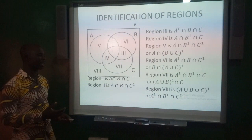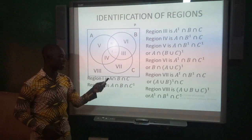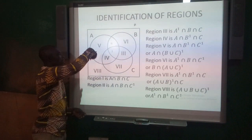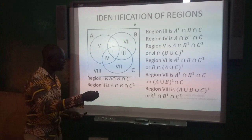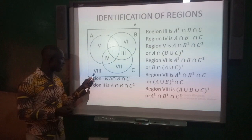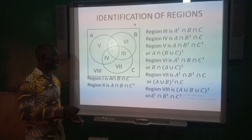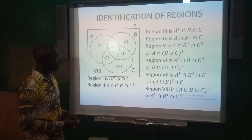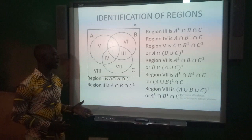C only can be written in set language as A union B complement intersection C. Region VIII is outside A, B and C but within the universal set. VIII is referred to as the complement of A, B and C, and can also be written as A complement intersection B complement intersection C complement. These are the various regions that can be identified in a three set problem.